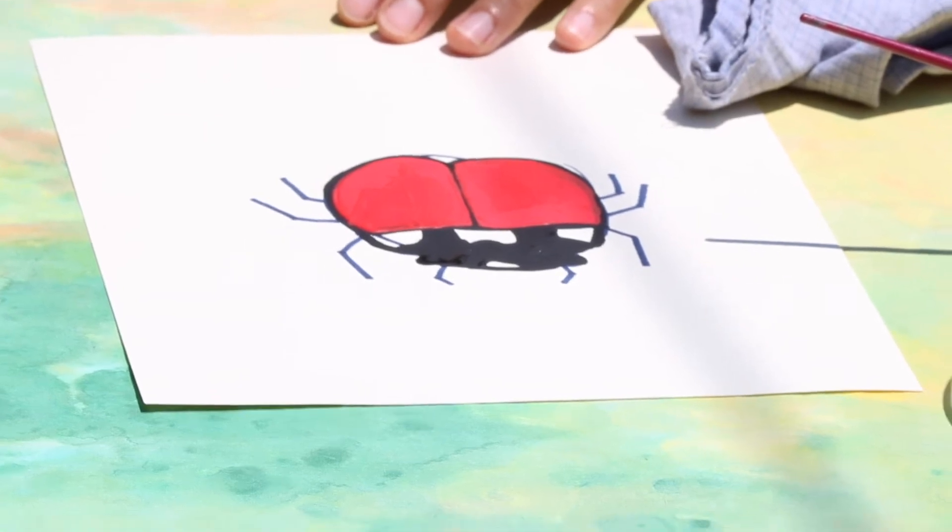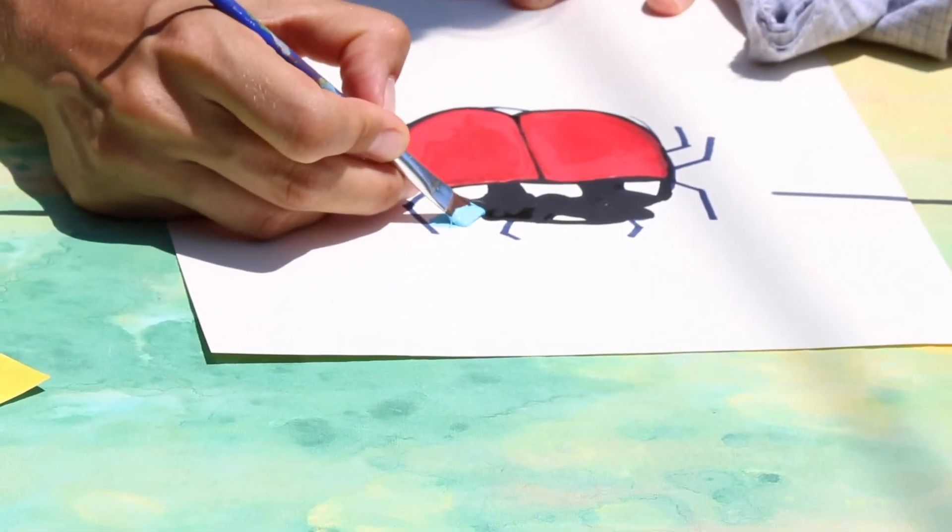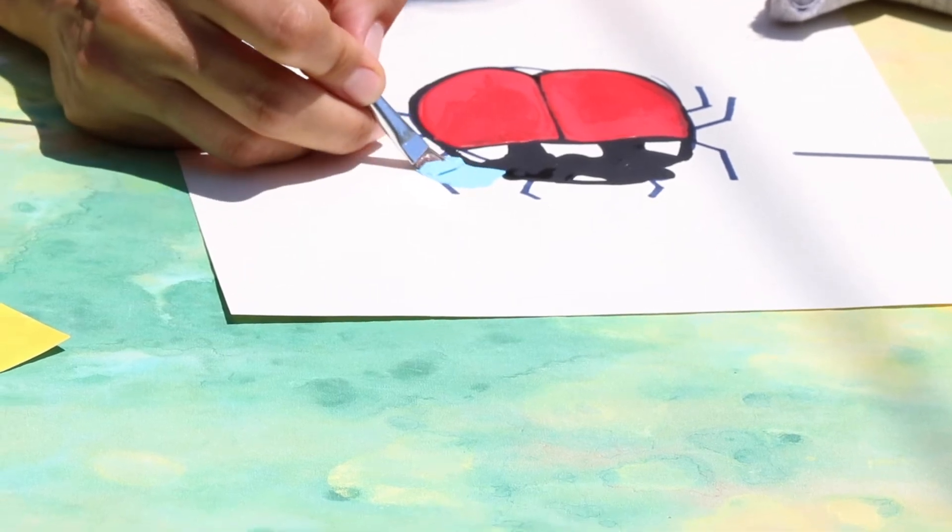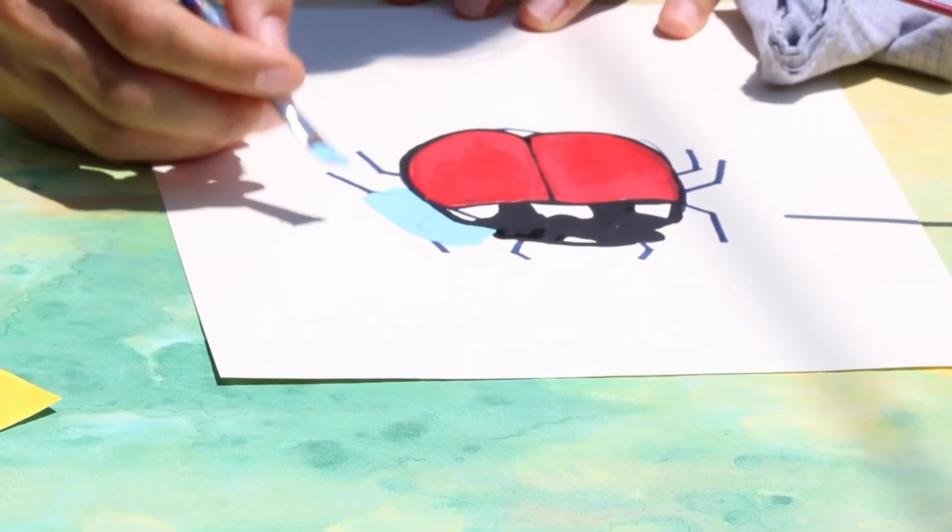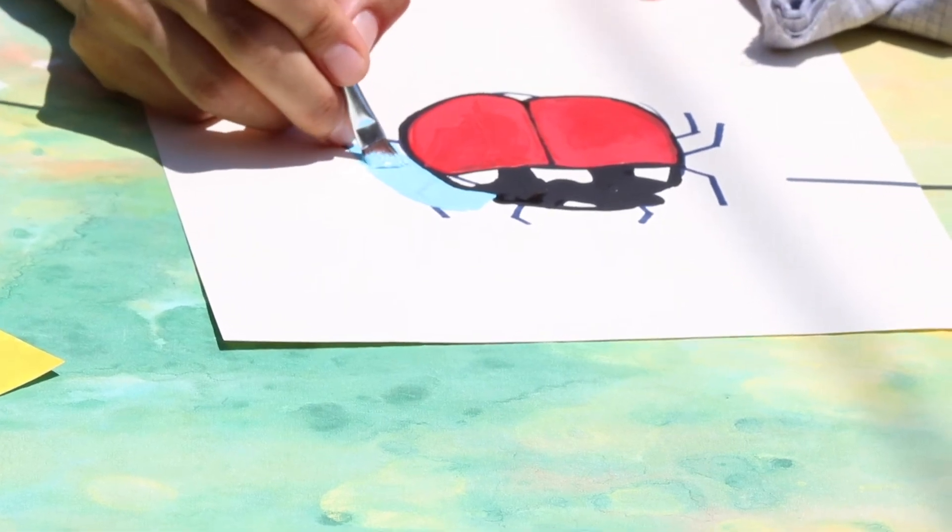Okay, so again I put a lot on my paintbrush and I use my flat paintbrush to guide around my ladybug. I'm going right over those legs, but I'll paint them back in with black once the background dries.